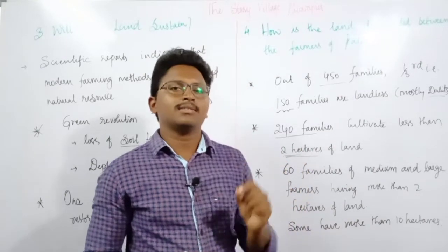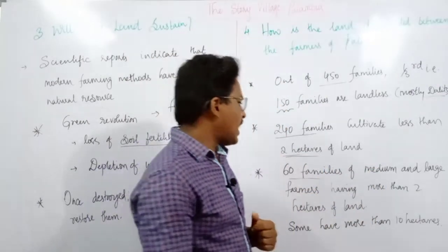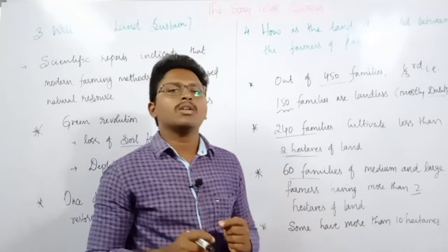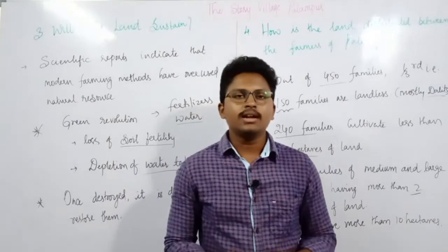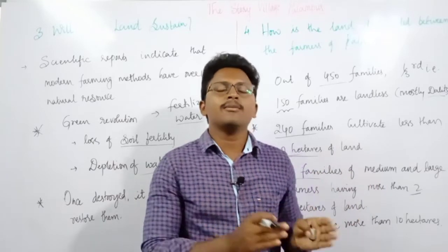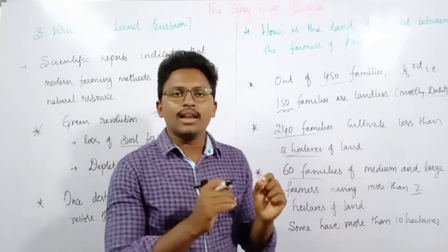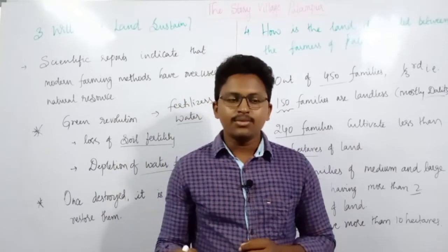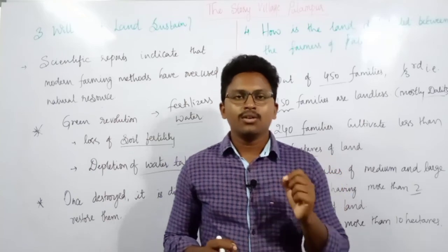So out of 450 families: 150 are landless, 240 families cultivate less than two hectares, and the remaining 60 families are medium and large farmers with more than two hectares. Some farmers in the village even have more than 10 hectares of land. We can conclude that land is unevenly distributed in this village — some people have a lot of land, some very little, and some have none at all. In the next lecture we will discuss who provides the labor in this village.